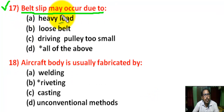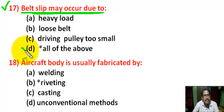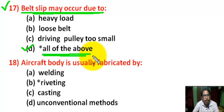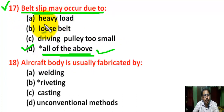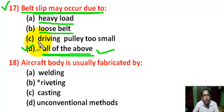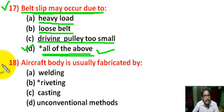Question number 17: belt slip may occur due to — there are 4 options. Correct answer is D: All of the above — belt slip may occur due to heavy load, due to a loose belt, or due to driving pulleys being too small.